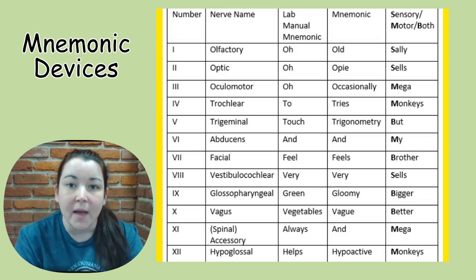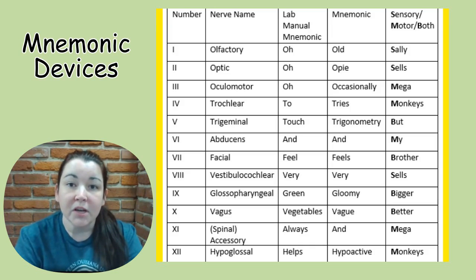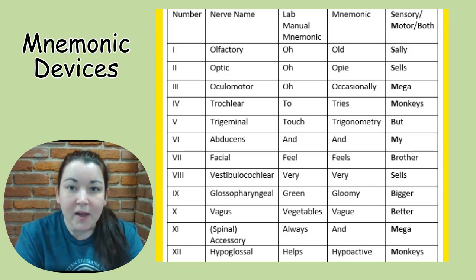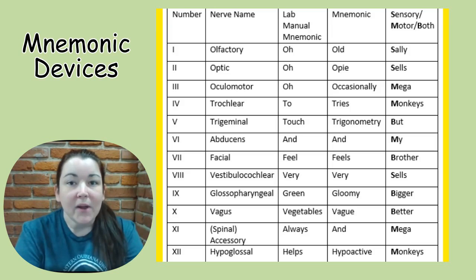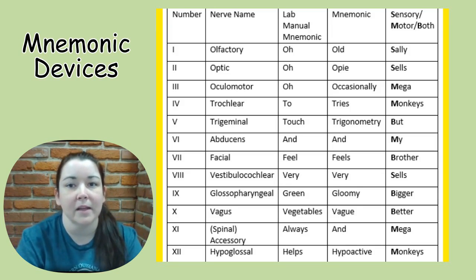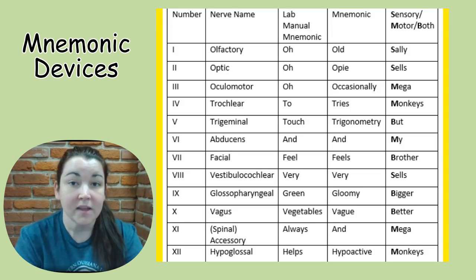One mnemonic you'll find in your lab manual says next to each cranial nerve for the brain model: 'O O O to touch and feel very green vegetables always helps.' That's an okay mnemonic device, but when I look at it I think — which one is which? There are three cranial nerves that start with O: cranial nerves one, two, and three all begin with the letter O.